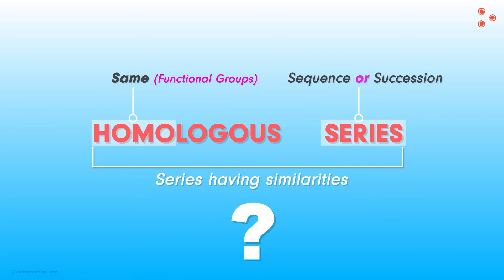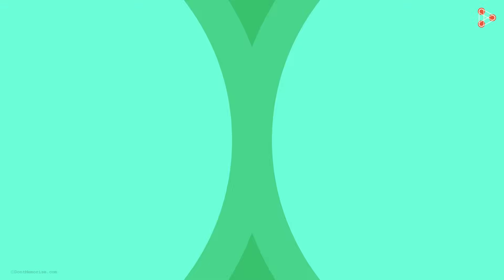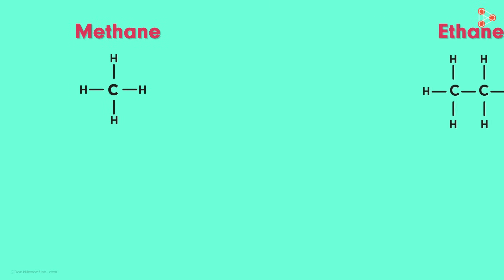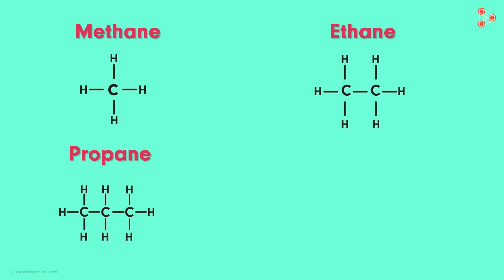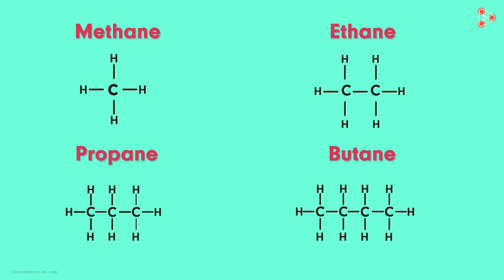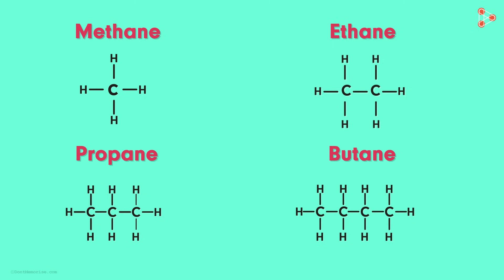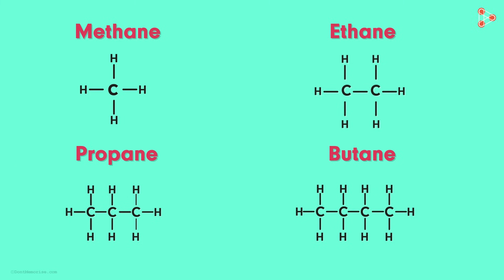Let us consider the simpler alkanes: methane, ethane, propane, and butane. Are they in succession? They occur one after the other. But what exactly makes them successive to each other?